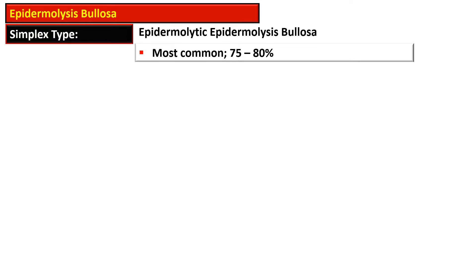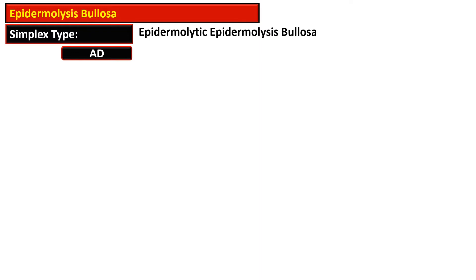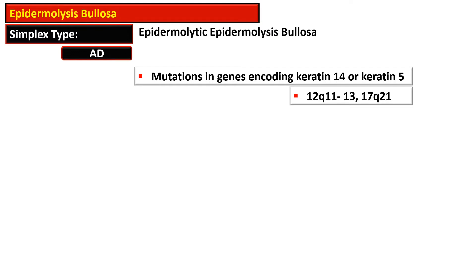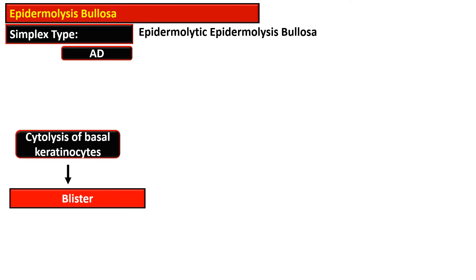The Epidermolysis Bullosa simplex type, also termed epidermolytic Epidermolysis Bullosa, is the most common variety, occurring in more than three-quarters of patients. It is inherited as an autosomal dominant disorder due to mutation in the genes encoding Keratin 14 and Keratin 5. The gene for Keratin 14 is located on the long arm of chromosome 12, while Keratin 5 is on the long arm of chromosome 17. Together they form a keratin fiber, and when unable to do so, they fail to support the cell, resulting in cytolysis of the basal keratinocyte and blister formation.